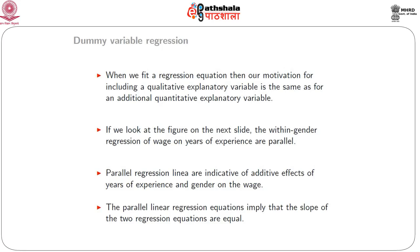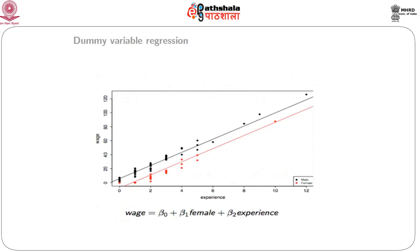For females, the intercept is alpha-hat, and for males, the intercept is alpha-hat plus beta-hat. The added term beta-hat in the intercept gives the second regression equation, which has the same slope as the first and is therefore parallel to it, but shifted along the intercept axis by the quantity beta-hat.